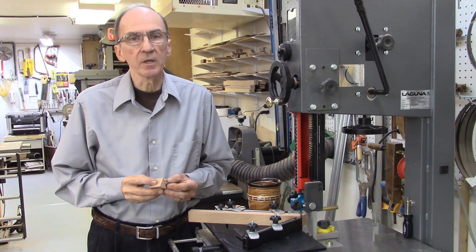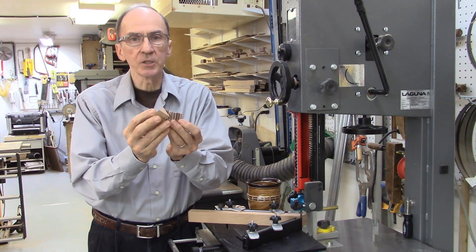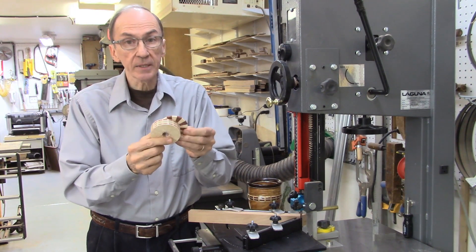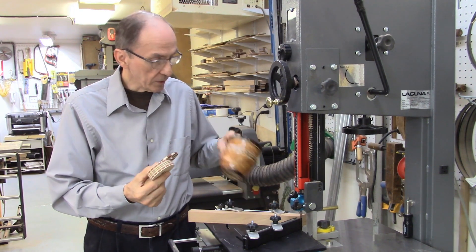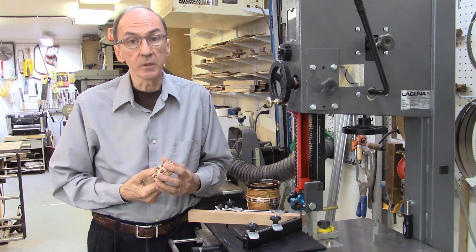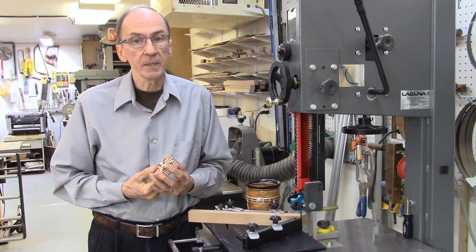A table saw or a chop saw is normally used to produce the wedges which are needed to produce the segmented rings which in turn become part of a segmented woodturning project. However, this technique wastes a good deal of wood due to the wide kerf of the table saw blade.